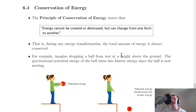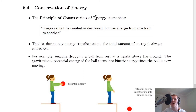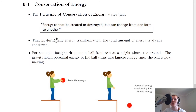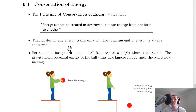Next is conservation of energy. The principle of conservation of energy states that energy cannot be created or destroyed, but can change from one form to another. This is also known as the law of conservation of energy. During any energy transformation, the total amount of energy is always conserved — it just changes from one form into another.